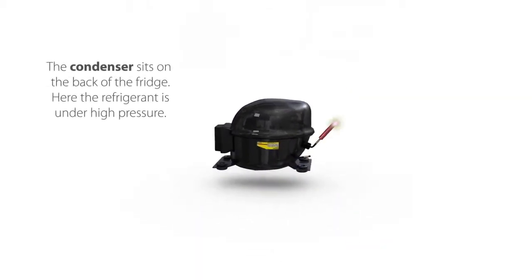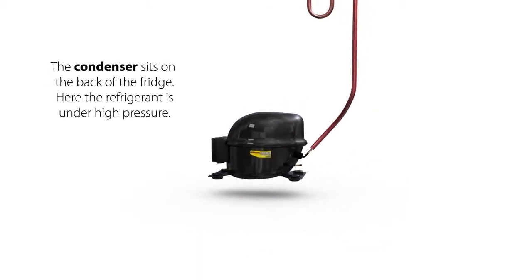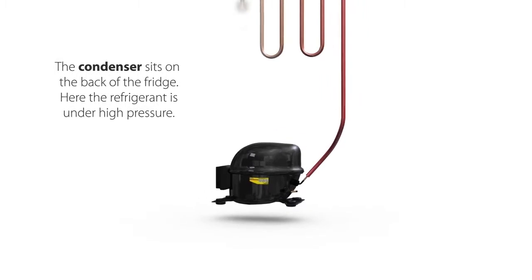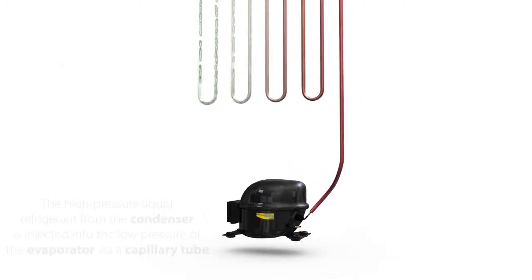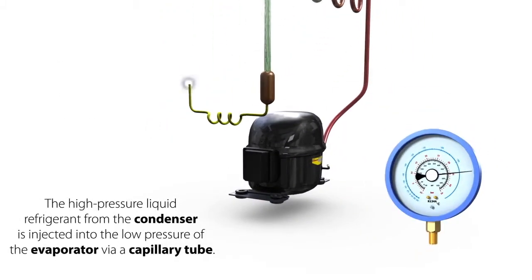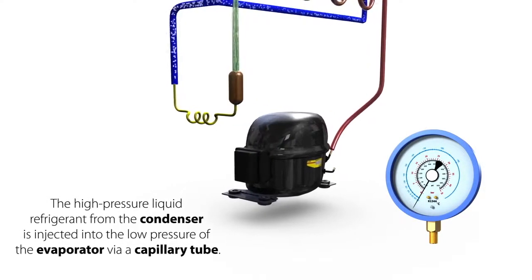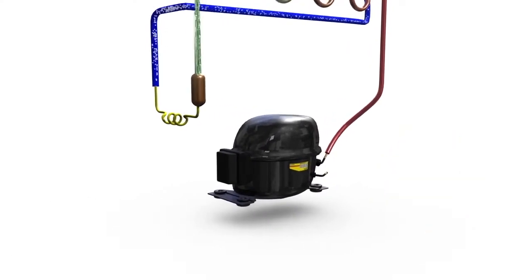The condenser sits on the back of the fridge. Here the refrigerant is under high pressure. The high pressure liquid refrigerant from the condenser is injected into the low pressure of the evaporator via a capillary tube.